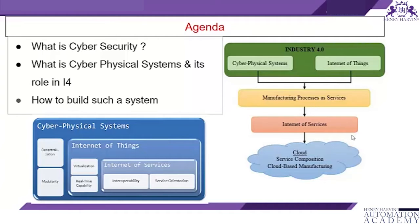We will explore the role of CPS in Industry 4.0, how to build such a system, and what kind of architecture it looks like. Industry 4.0 is built on key technologies — cyber physical systems and the Internet of Things — and on top of these we build manufacturing processes and services. We use cloud services and internet services to automate our systems and make them ready for the latest technologies.